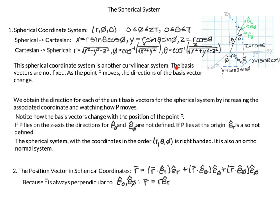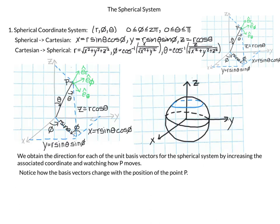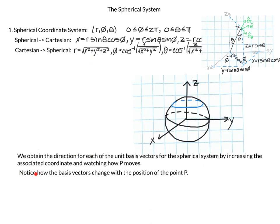Next, we want to look at the basis vectors. Because the basis vectors are not fixed, as point P moves in space the directions of the basis vectors change. We obtain the direction for each unit basis vector by increasing the associated coordinate and watching how P moves.